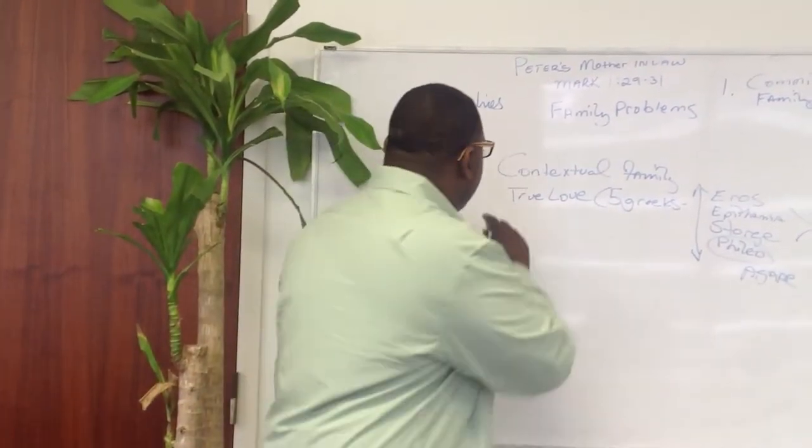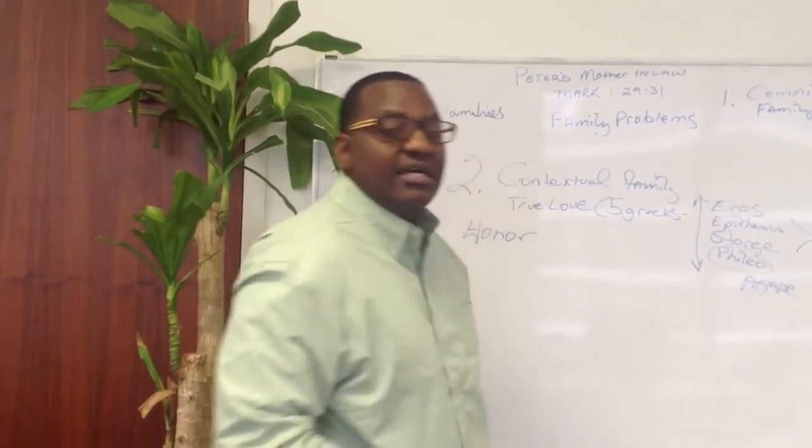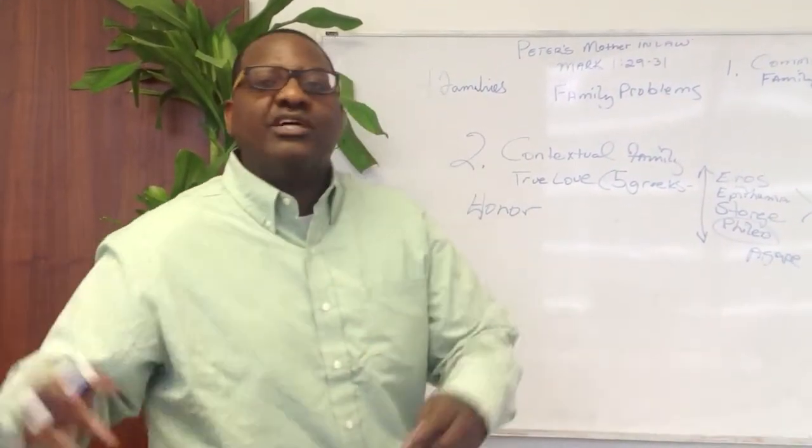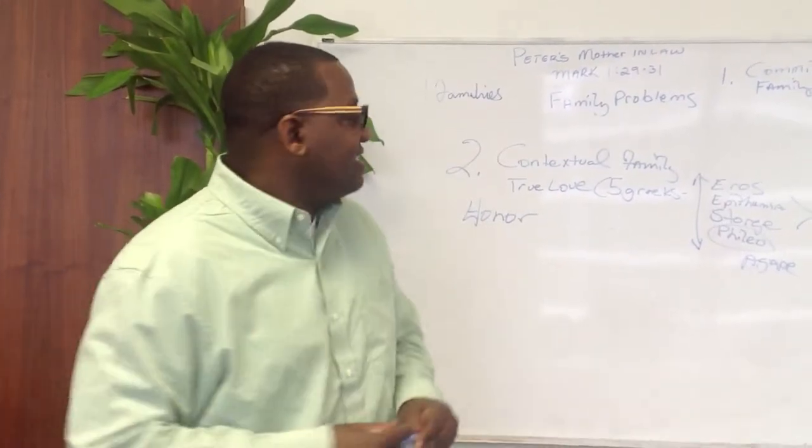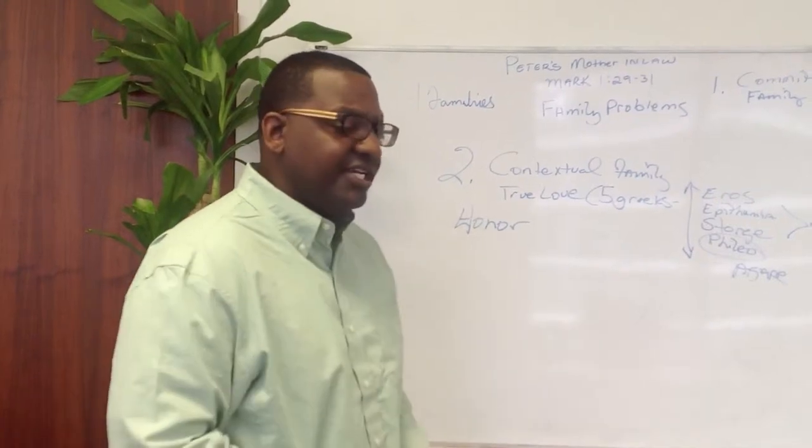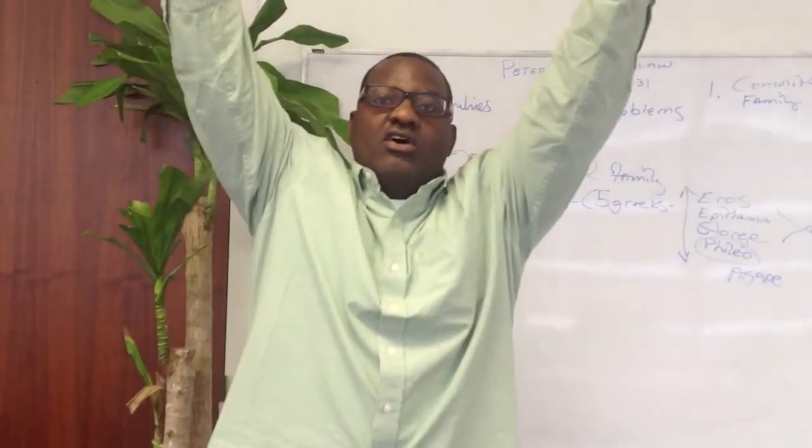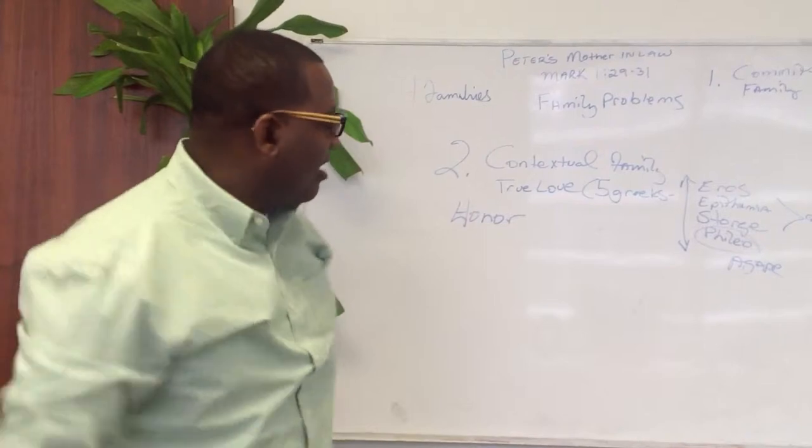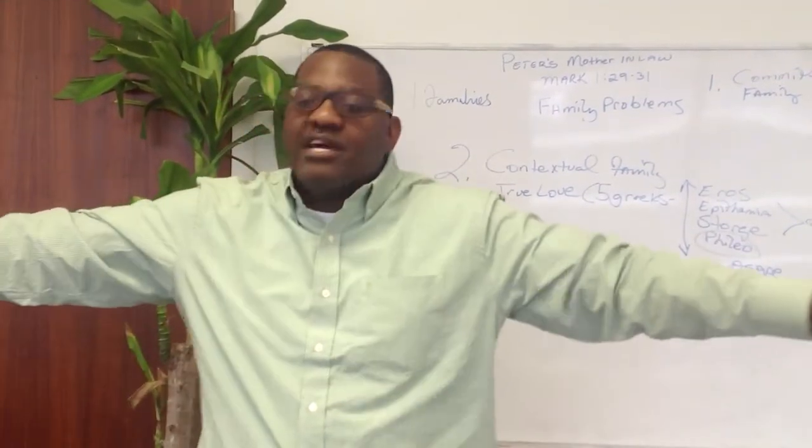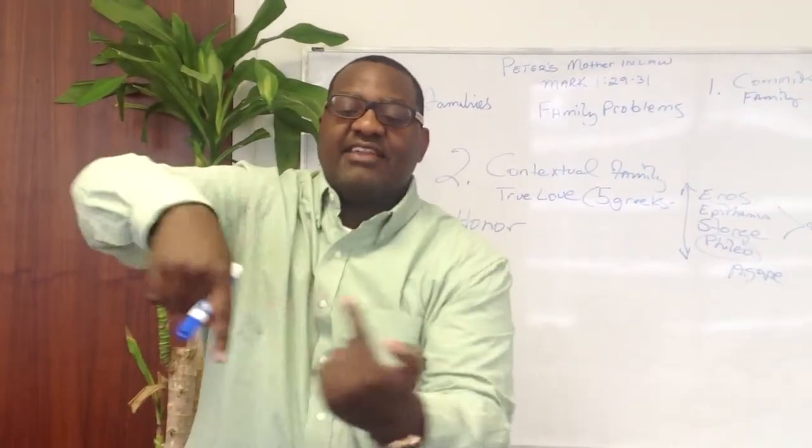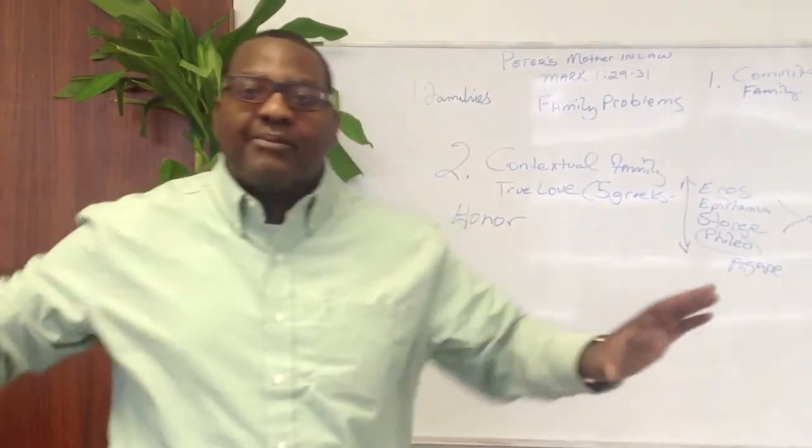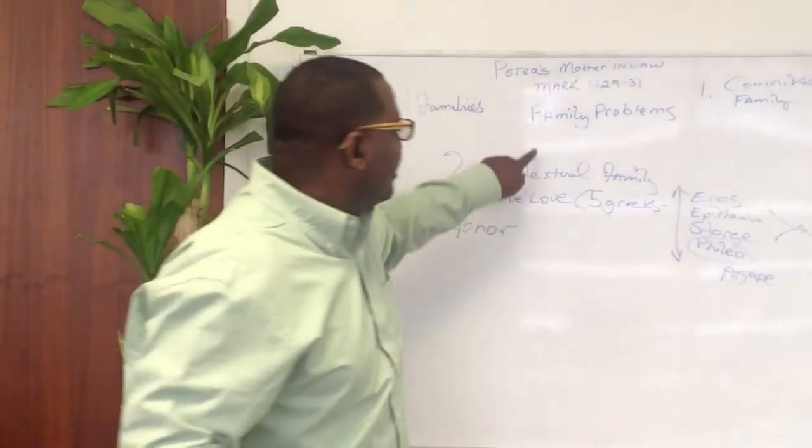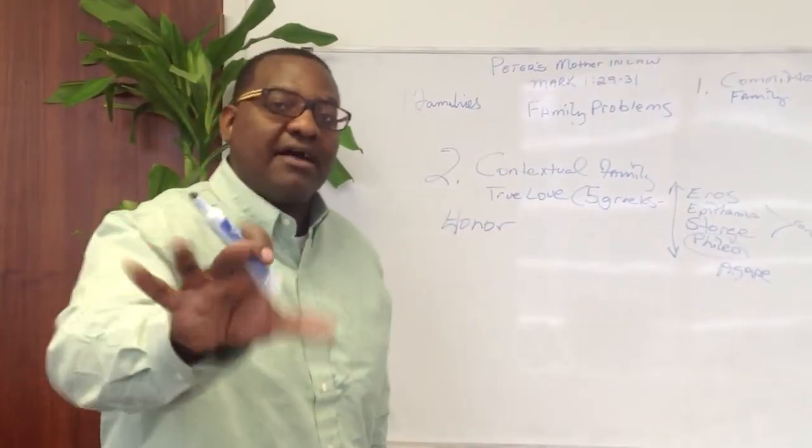The first commandment with promise is commandment number five, and that fifth commandment says honor your mother and your father. You can go over to Ephesians chapter 6, verses 1 through 4, and it says that it might go well with you, that you might have a long life. This is the commandment with a promise. The first four commandments go up this way - these are commandments that teach us how to worship God. This commandment here reaches outward, teaches us how to deal in internal relationships, how to operate in the context of family and connections with other people. Family, the contextual family, is the foundation for it all.